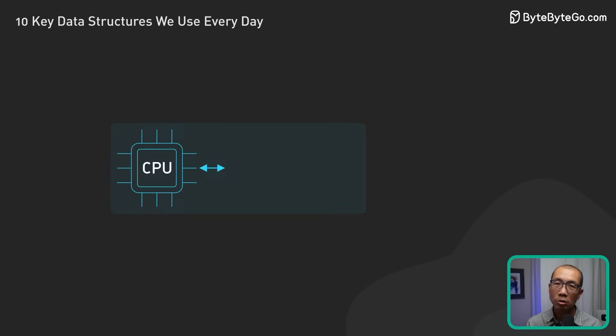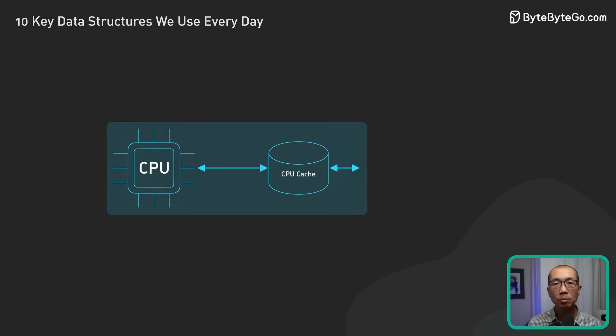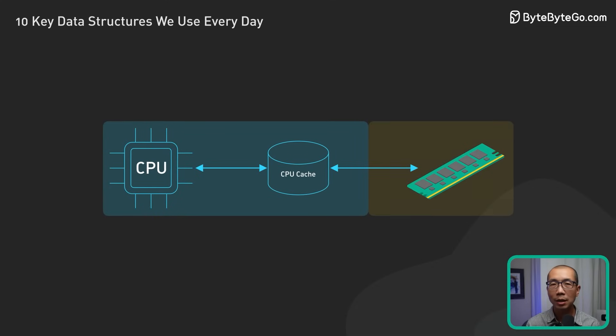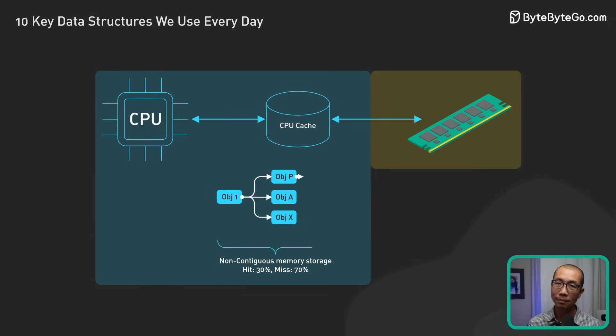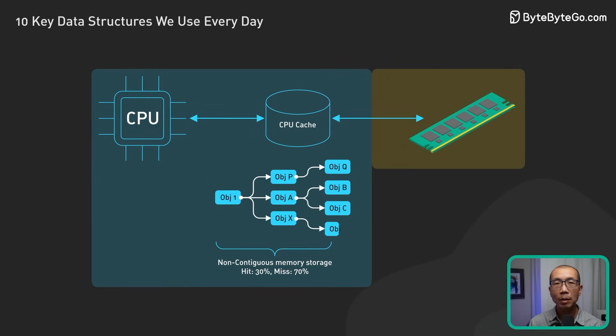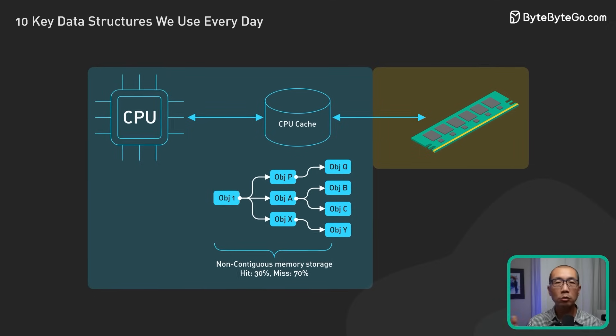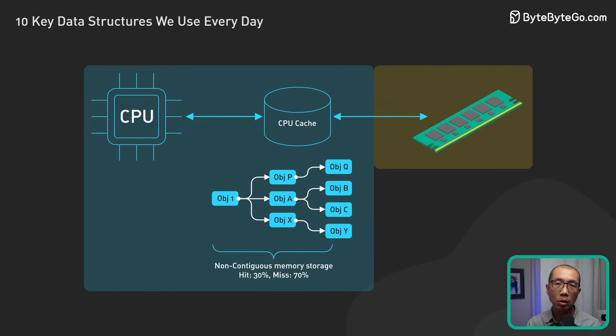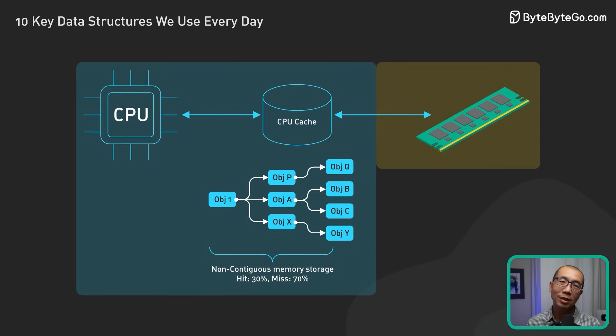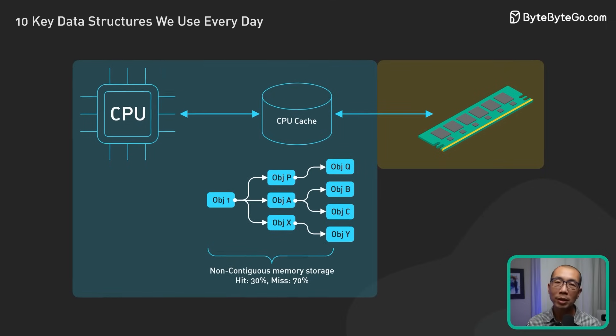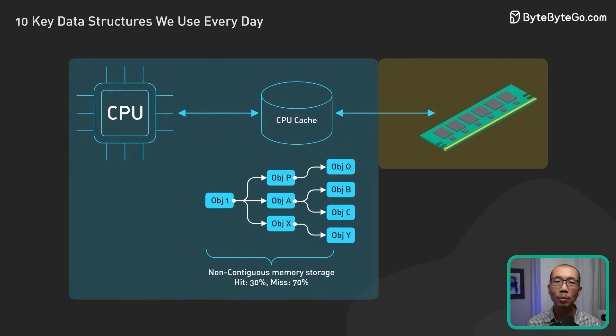On the other hand, data structures with non-contiguous memory storage, like linked lists, can experience more cache misses and reduced performance. In a linked list, elements are stored in nodes scattered throughout the memory, and each node contains a pointer to the next node in the sequence. This makes it difficult for the CPU to predict and load the next node before it's needed.